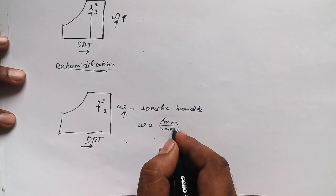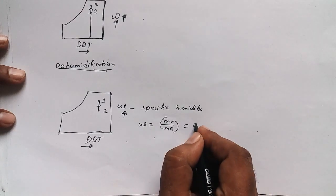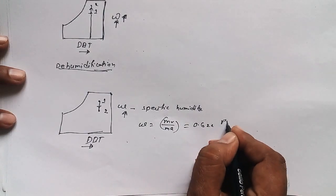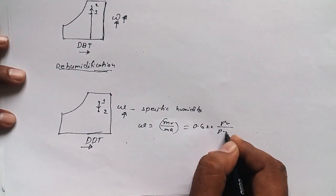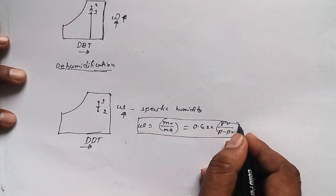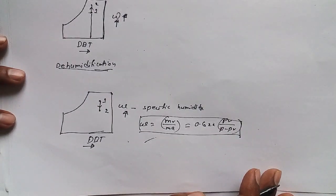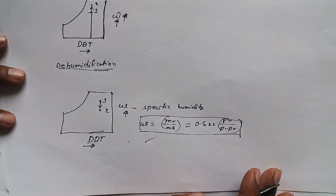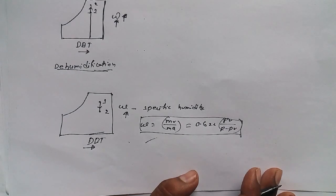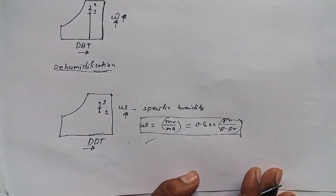Specific humidity, denoted by omega, is equal to mv upon ma — mass of water vapor divided by mass of dry air — which equals 0.622 × pv divided by (p minus pv). This is one of the most important formulas if you are preparing for any competitive examination such as GATE or SSC JE or any other company examination.